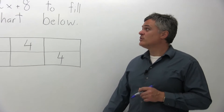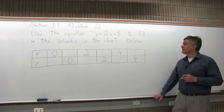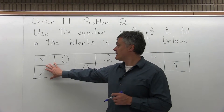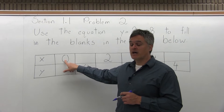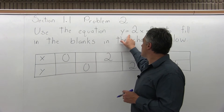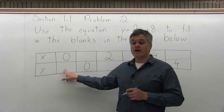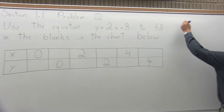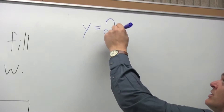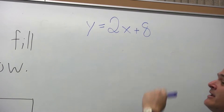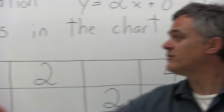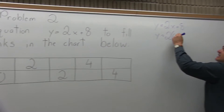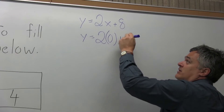Use the equation y equals 2x plus 8 to fill in the blanks in the chart below. We have a chart here with x and y values. In the first position, we're given an x value of 0 and we want to use the equation y equals 2x plus 8 to find what the y value would be. Starting to the side, y equals 2 times x, which becomes 2 times 0 when we put in 0 for x.